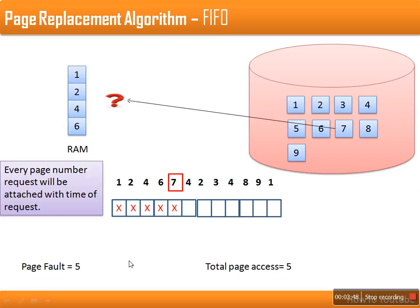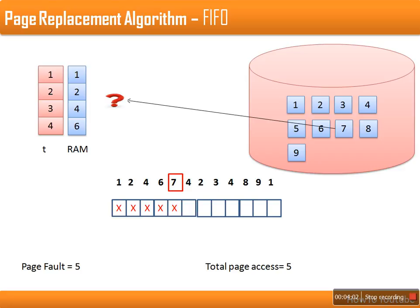How do we know which page came in at what time? Every page, when loaded into RAM, has a timestamp attached to it. I'm using a sequence number showing at which step that page was loaded. This page was loaded first, this one second, third, and fourth. If we want to load a new page, we simply replace the page with the lowest timestamp. So page 7 replaces page number one, since page one has the minimum timestamp.